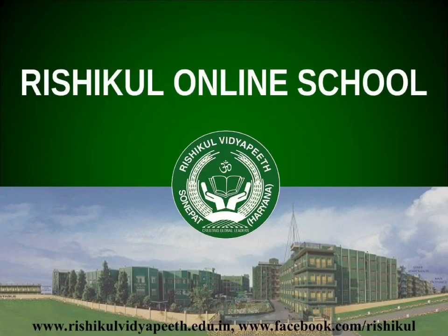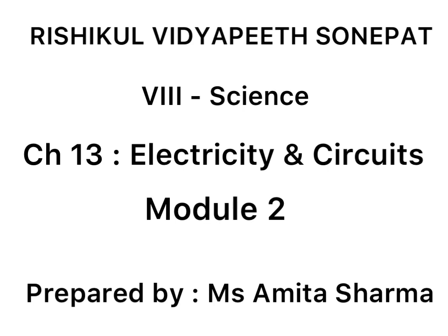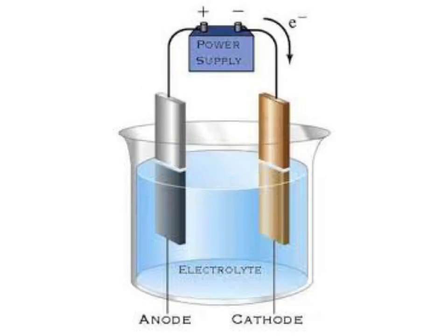Good morning students. In our previous module we discussed chemical effects of electric current. We discussed what are electrolytes, what are non-electrolytes, what is cathode, what is anode, what is electrolytic cell. We discussed about strong and weak electrolytes.